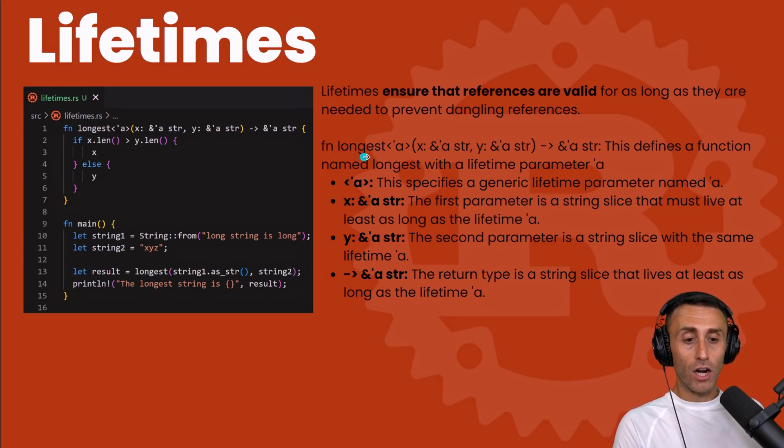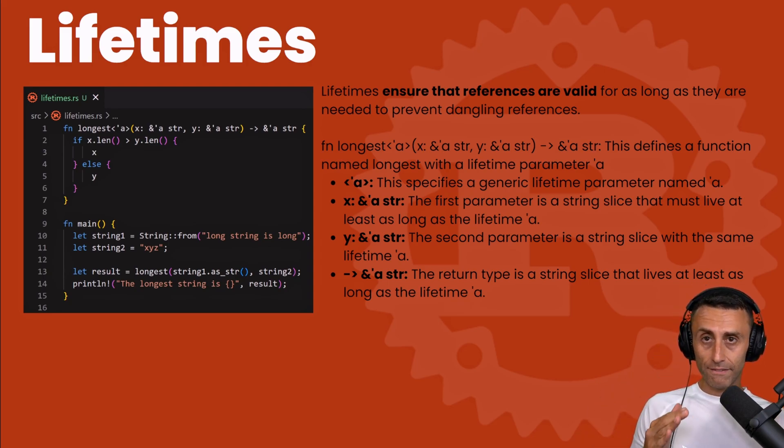Let's focus for a moment on this syntax and let's try to digest it. fn longest - basically we want the longest string here. We are getting this tick 'a which specifies this generic lifetime parameter, and then we have two parameters that also have the lifetime tick 'a: x, this is a reference to a lifetime of type string here, both for x and y. And we see that as a return type, this is a string slice that lives at least as long as the lifetime tick 'a.